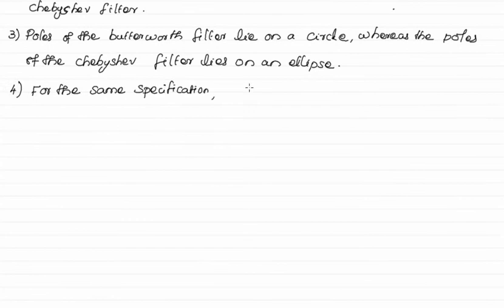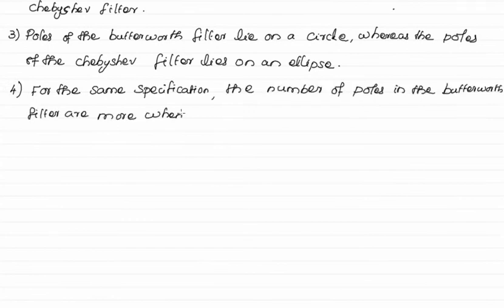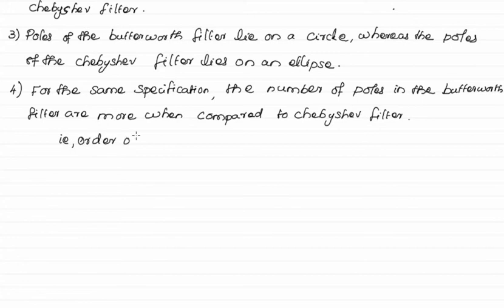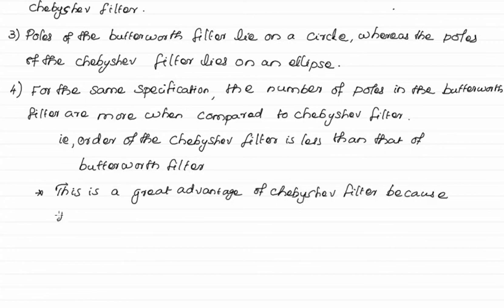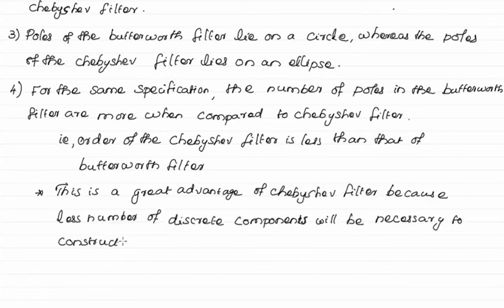For the same specification, the number of poles in the Butterworth filter is greater than in the Chebyshev filter — that is, the order of the Chebyshev filter is less than that of the Butterworth filter. This is a great advantage because fewer discrete components will be necessary to construct the filter.